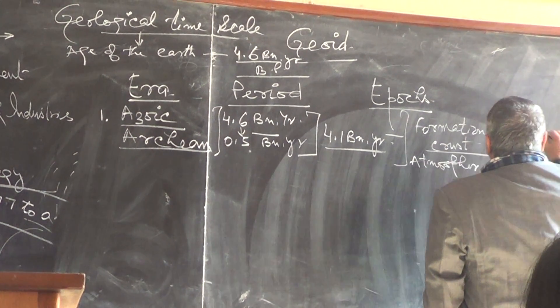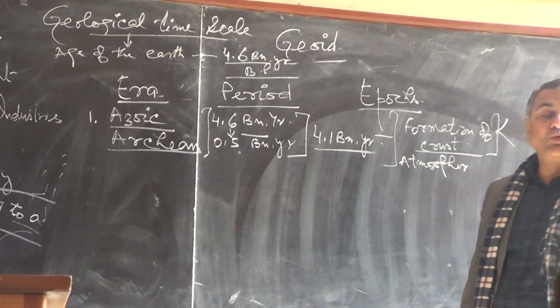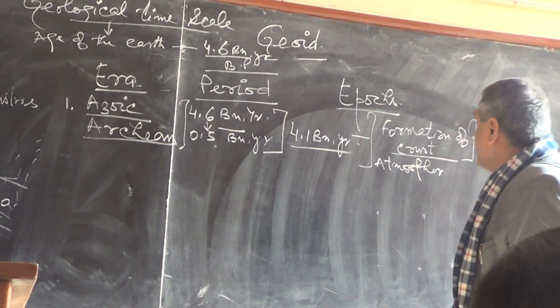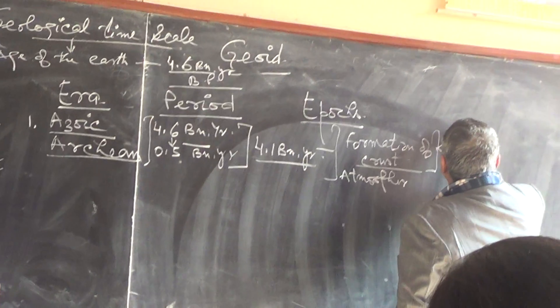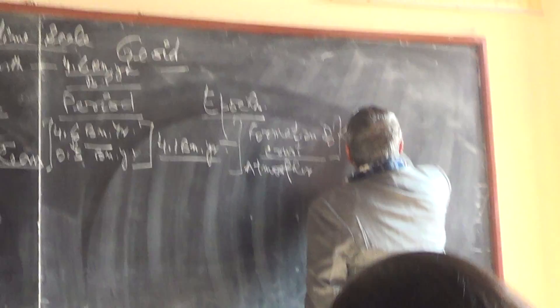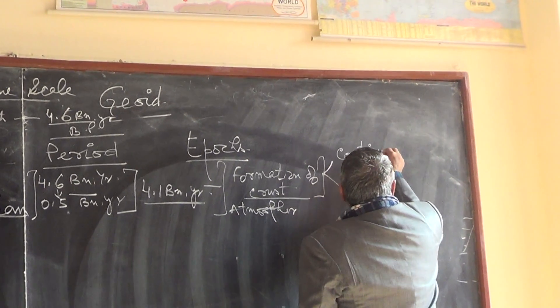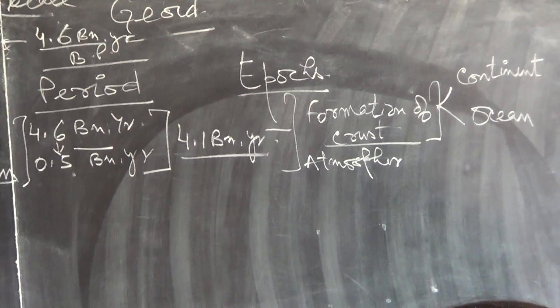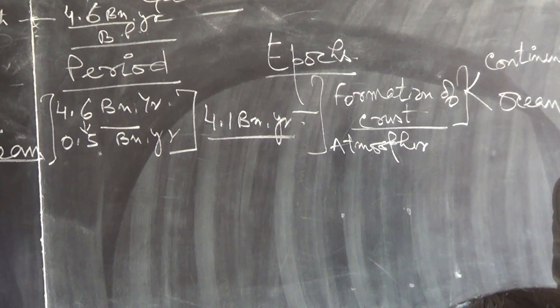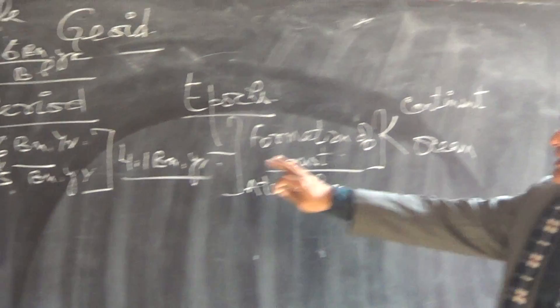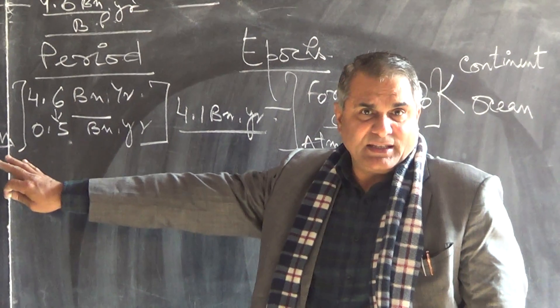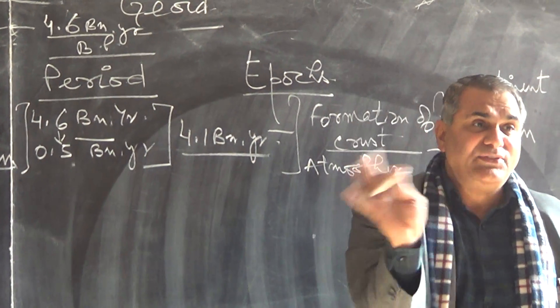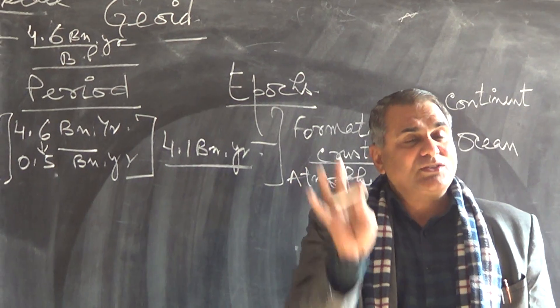In the crust, two orders of landforms were formed. First order is the continents, and second is the formation of oceans. These formations took place in the first phase in the Azoic or Archean period. There was no life on earth because the earth was cooling down.